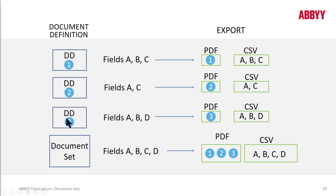For the third document definition, we're exporting fields A, B, and D. We get one PDF export and we're exporting just these three fields.